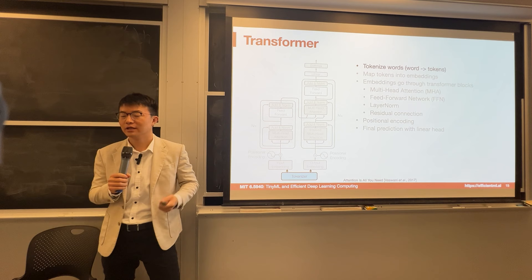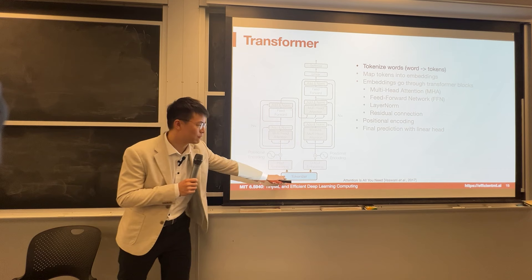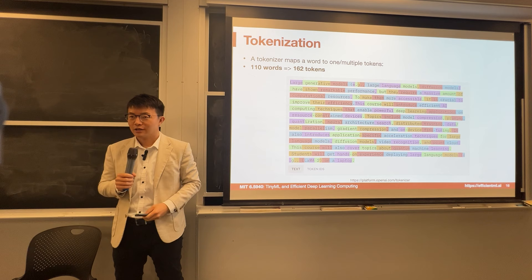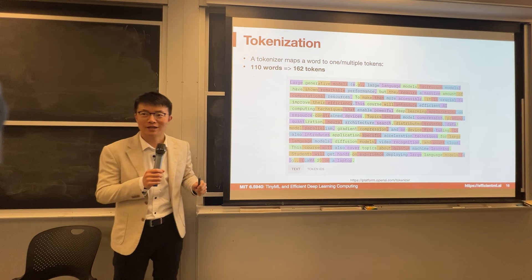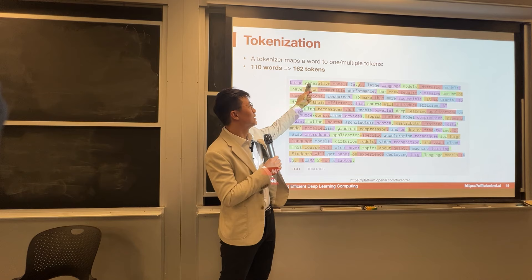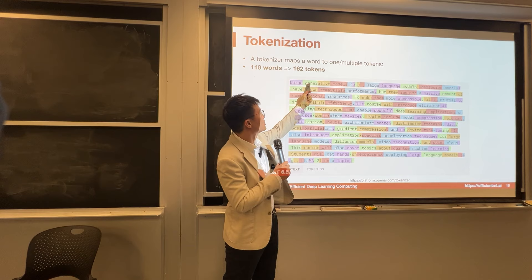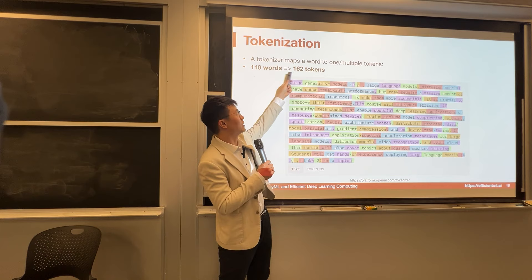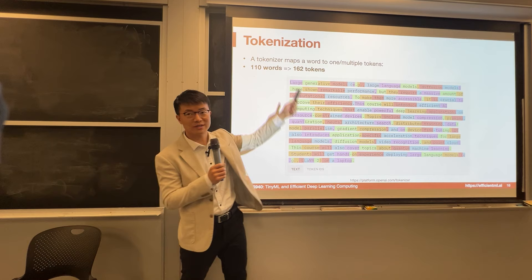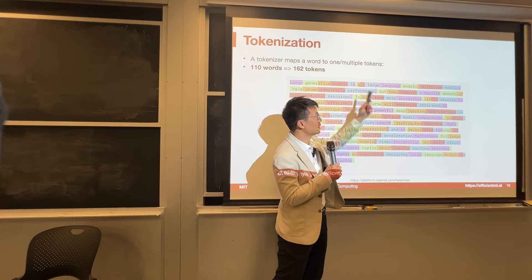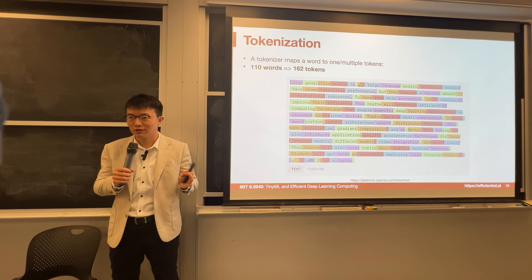So how do we convert a word into a token that computers can understand? This is the result of a tokenizer — each color is a different token. 'Generative' has been chopped into two tokens: 'Gener' is one token, 'ative' is another. The number of words is less than the number of tokens, roughly in a ratio of 1-to-5 or 1-to-6. One word can be split into several tokens, and a single word or comma can also be a token.